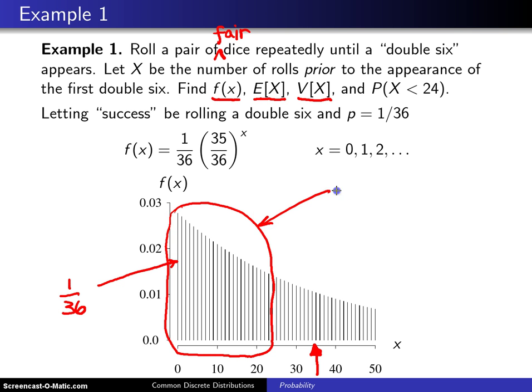Those spikes right there correspond to, if you add up their heights, 0.4914.